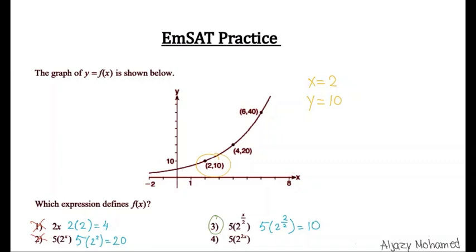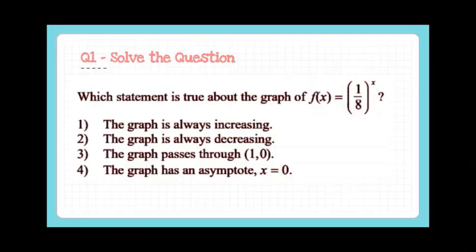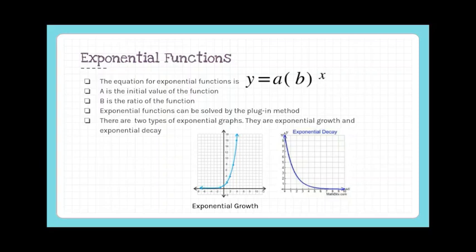The expression that defines f(x) is option 3. Now, which statement is true about the graph of f(x) equals (1/8)^x? The equation for exponential functions is y equals a times b^x, where a is the initial value and b is the ratio. Exponential functions can be solved by the plug-in method. There are two types: exponential growth and exponential decay.